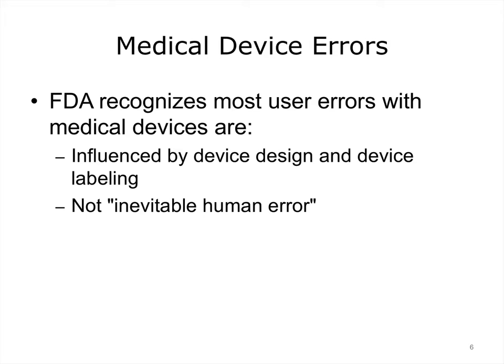The Food and Drug Administration is the government body that oversees and approves medical devices. The FDA recognizes that most user errors with medical devices are influenced by device design and device labeling — they're not inevitable human error. Usability is viewed as increasingly important by the FDA, but in many respects their standards are not quite up to what is necessary. They're much more focused on the accuracy and safety of the device, but certainly one would not want to ignore issues of usability.